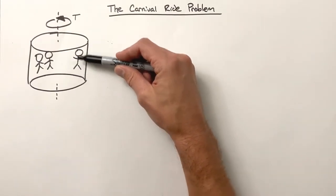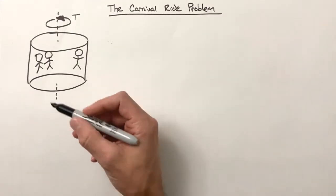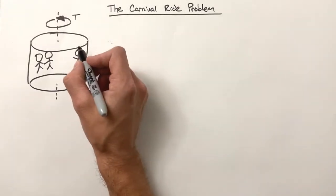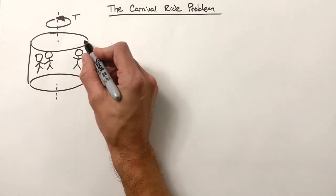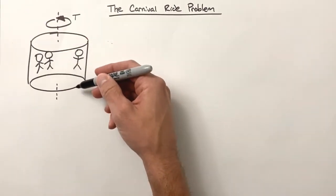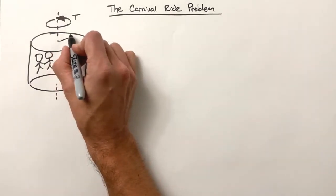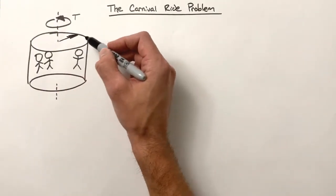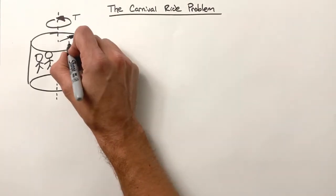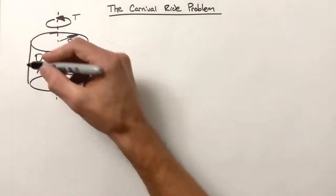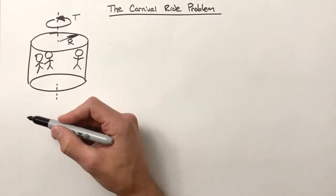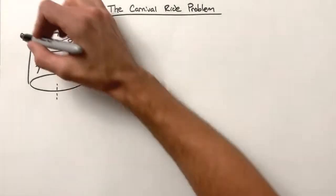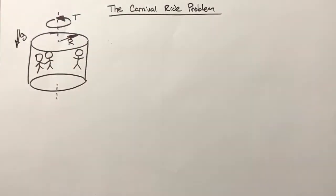The people are suspended there, screaming or having a grand old time as they spin around. What we're going to do is find the required amount of friction between the person and the wall so people don't slide down. We'll do this as a function of the period T, the radius, and gravity — g is always going to be pulling everything downward in this problem.